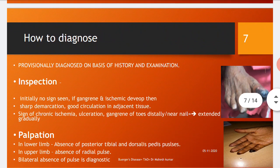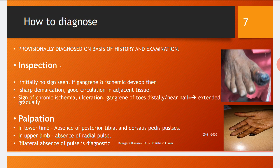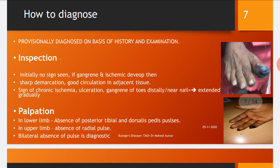How to diagnose Buerger's disease: Most cases are provisionally diagnosed on the basis of history and examination. On inspection, initially no signs are seen. If gangrene and ischemia develop, then sharp demarcation is seen with good circulation in adjacent tissues. Signs of chronic ischemia — ulceration and gangrene — appear distally near the nail and extend gradually.